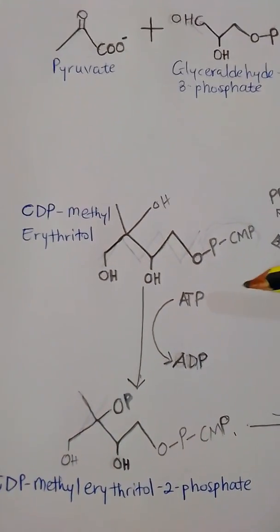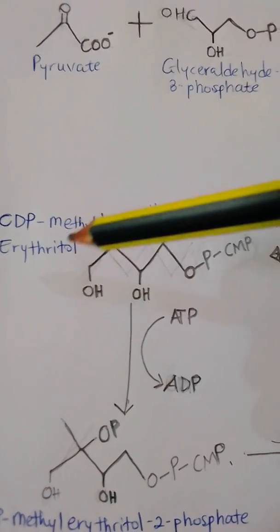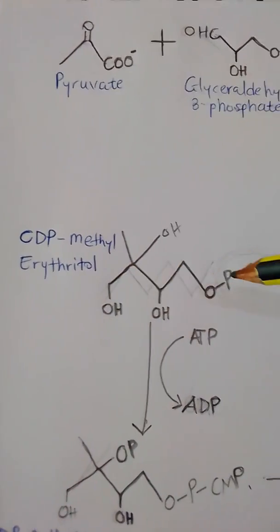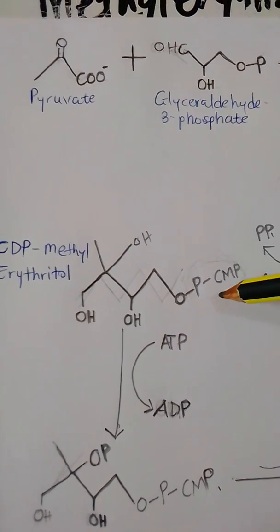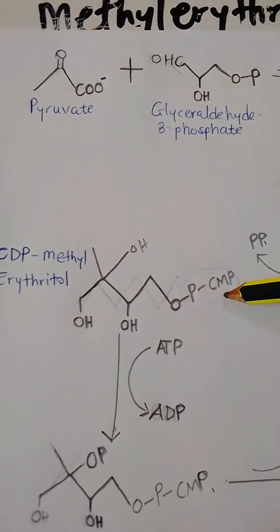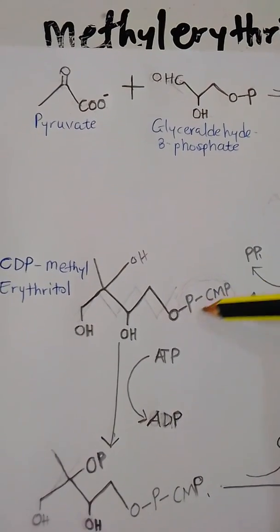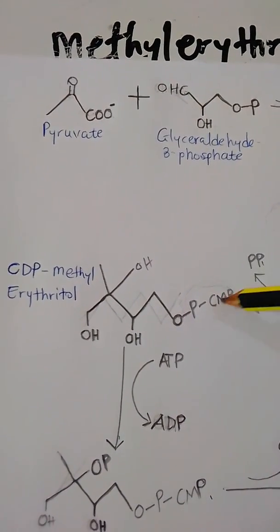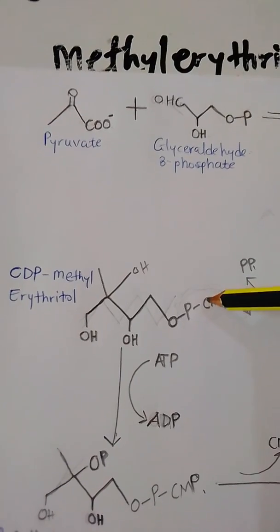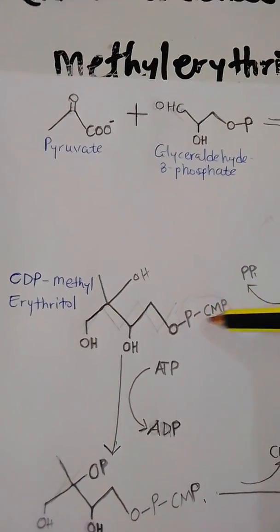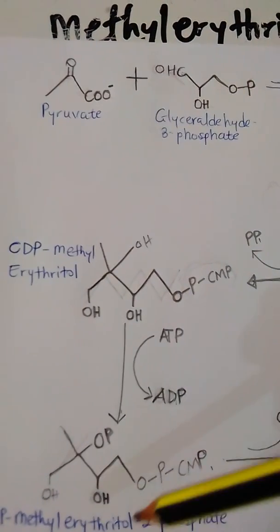The resulting compound is called CDP-methylerythritol. It is CDP because the CMP carries one phosphate and there is already a phosphate group on the MEP, so together we have a cytidine diphosphate group. This CDP acts as an activator to increase the reactivity of the MEP so that the next reaction can proceed.